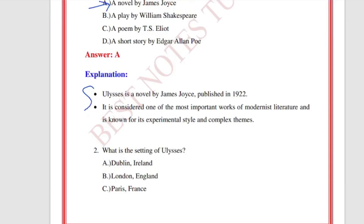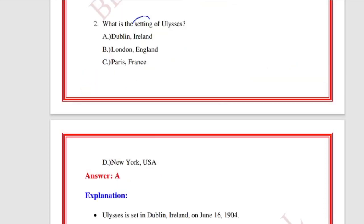Ulysses is a novel by James Joyce, published in 1922, and it is one of the best works of modern English literature. It is considered one of the most important works of modernist literature and is known for its experimental style and complex themes.